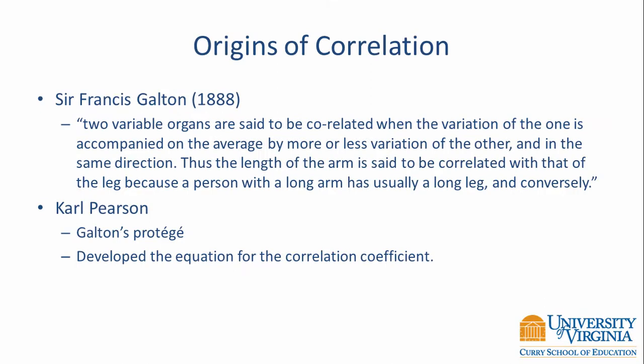Francis Galton created the notion of a correlation. He said that two variables are correlated when the variation of one is accompanied on average by more or less variation of the other and in the same direction. The example he gave was the relationship between the length of the arm and the length of the leg — people with short arms tend to have short legs and people with long arms tend to have long legs. Galton gave us the definition of the concept of a correlation.